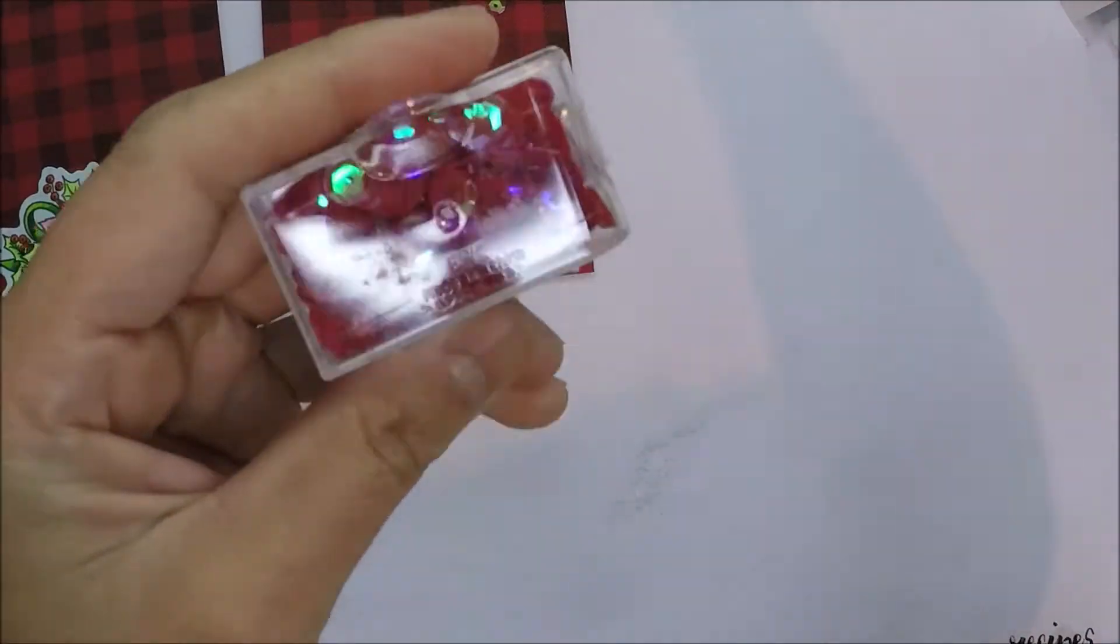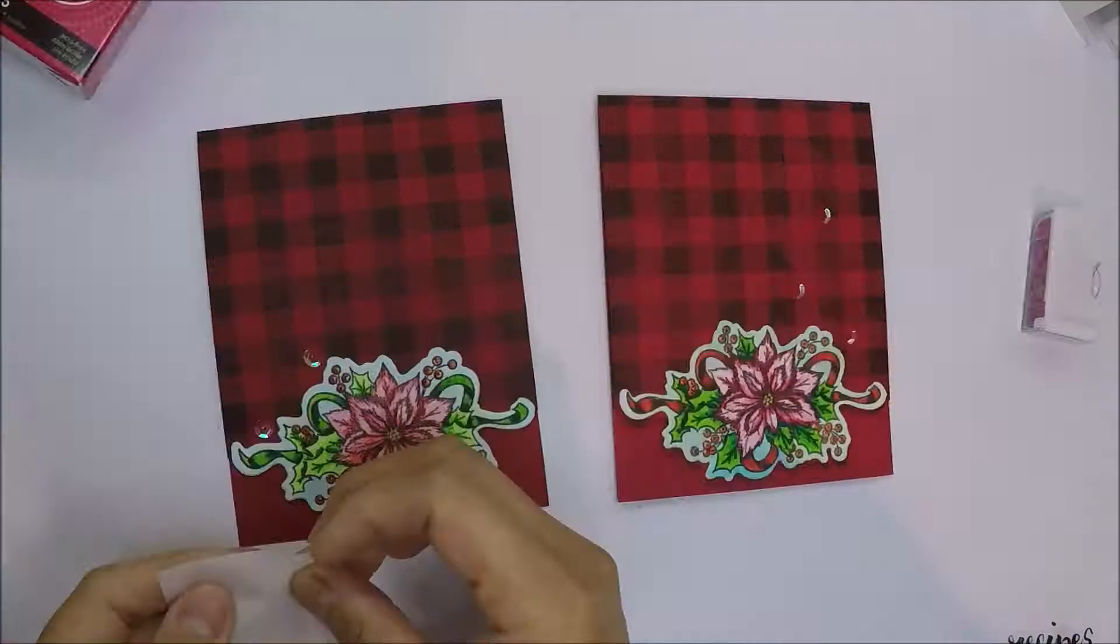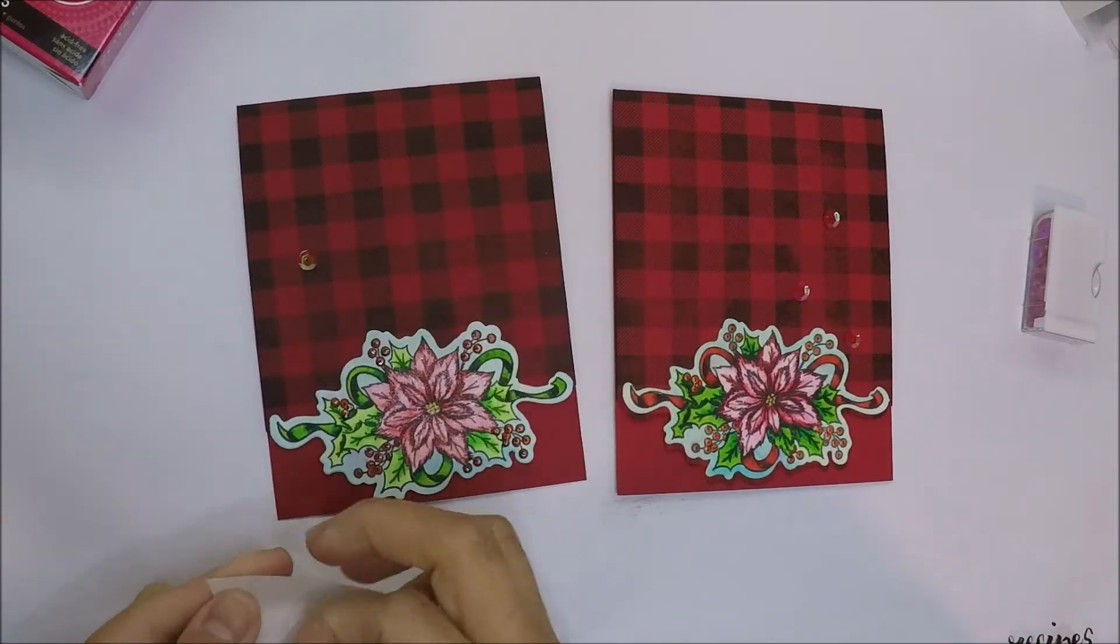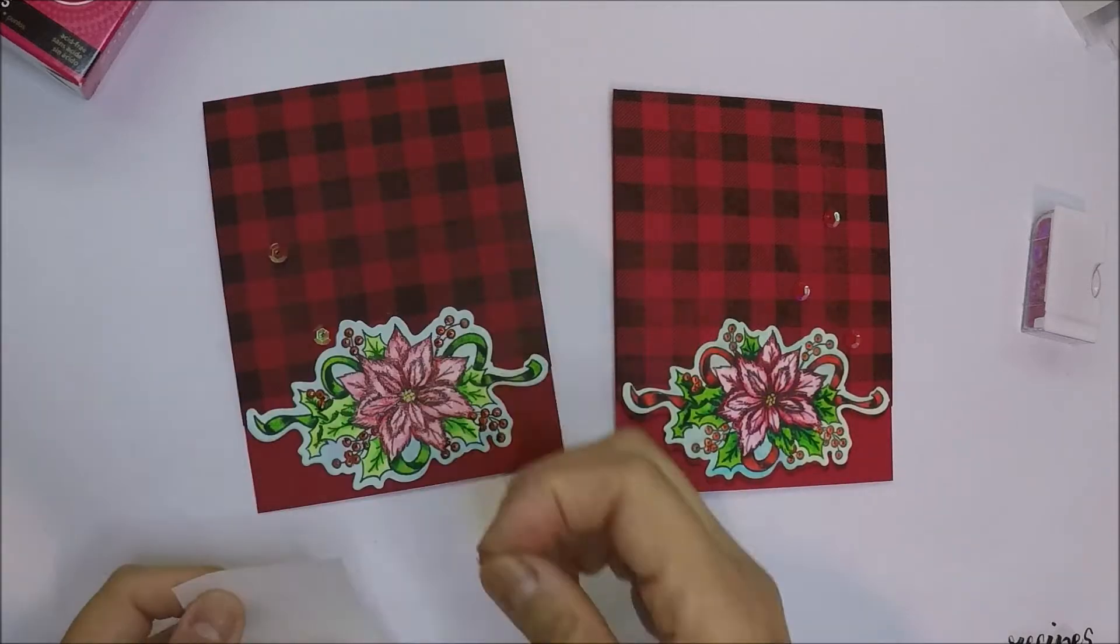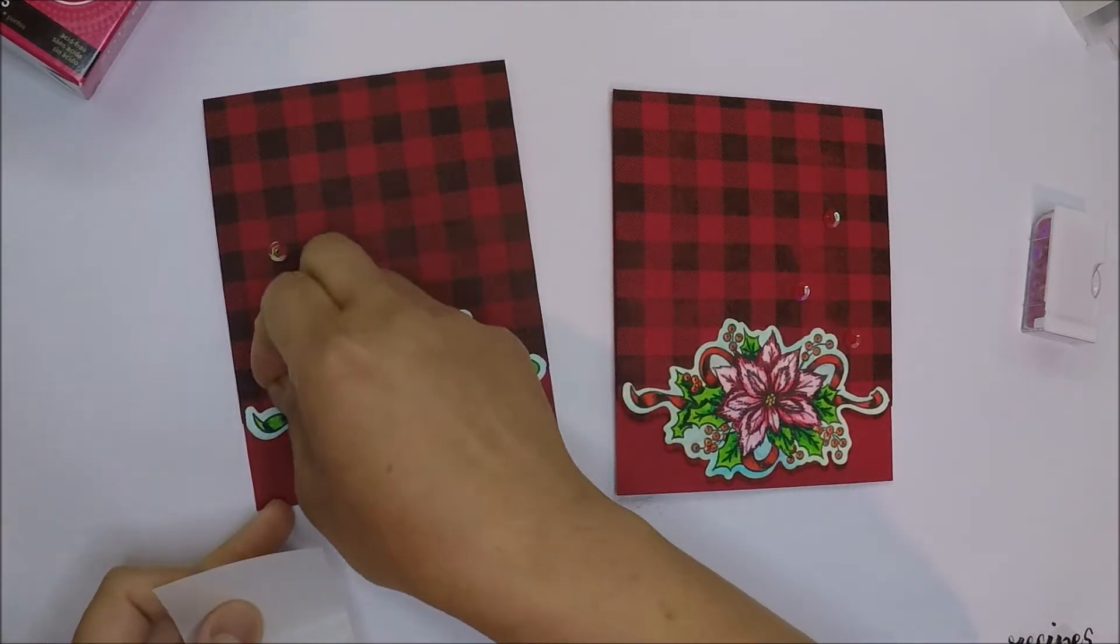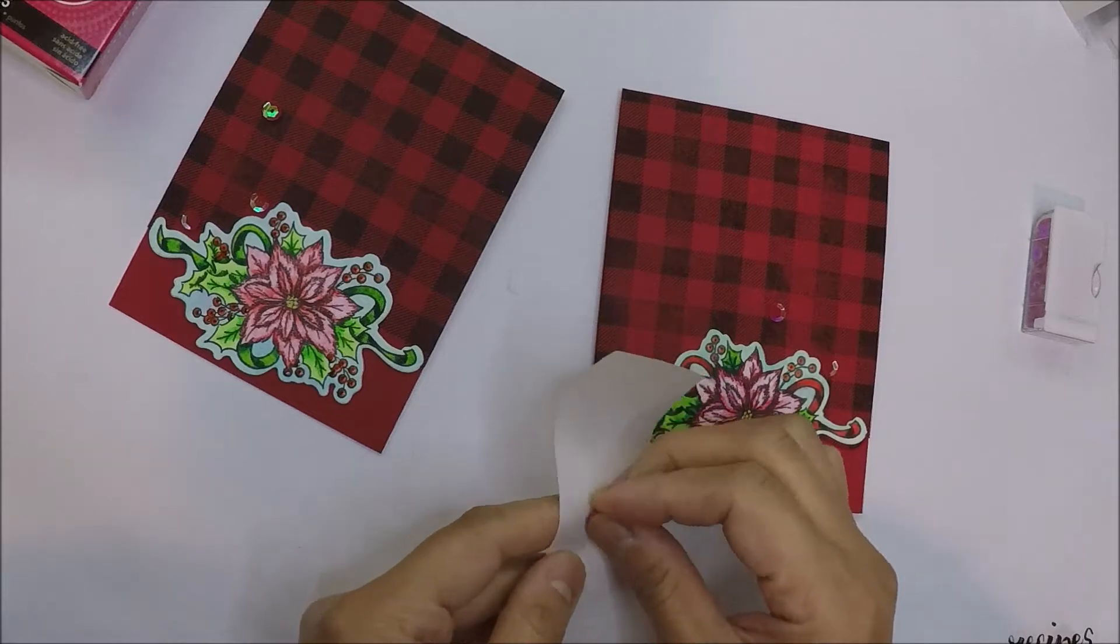For the embellishment, I will add a few of the red sequins from my stash. I'm going to adhere the sequins with micro glue dots. I placed the sequins on the right side on one of the cards and then left on the other card.